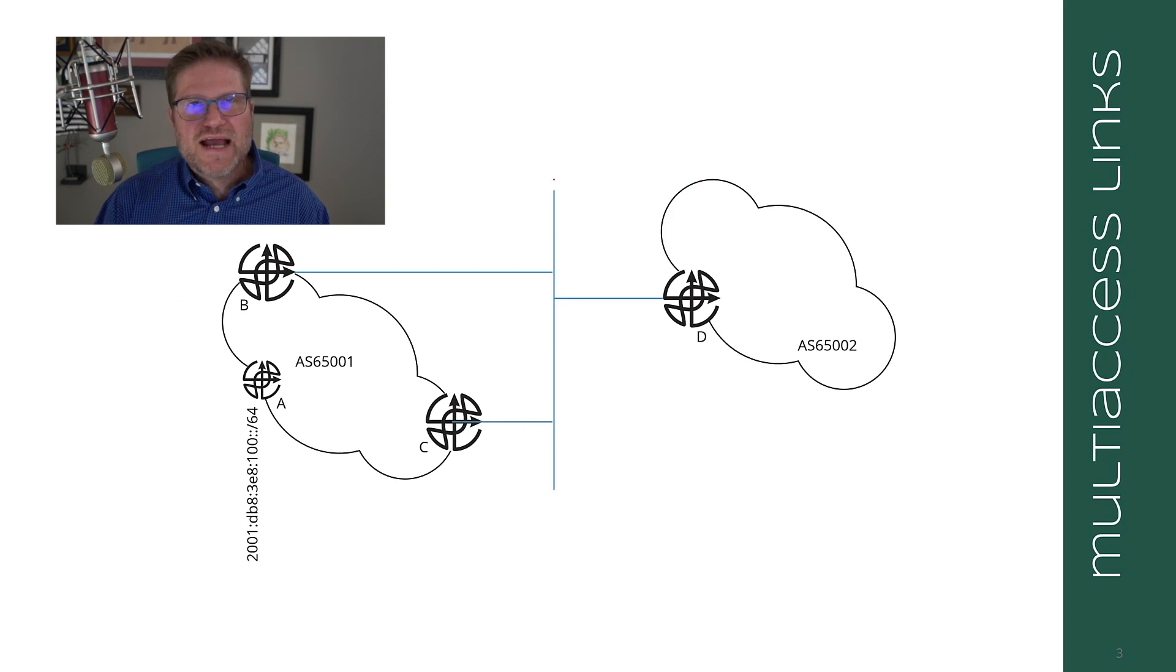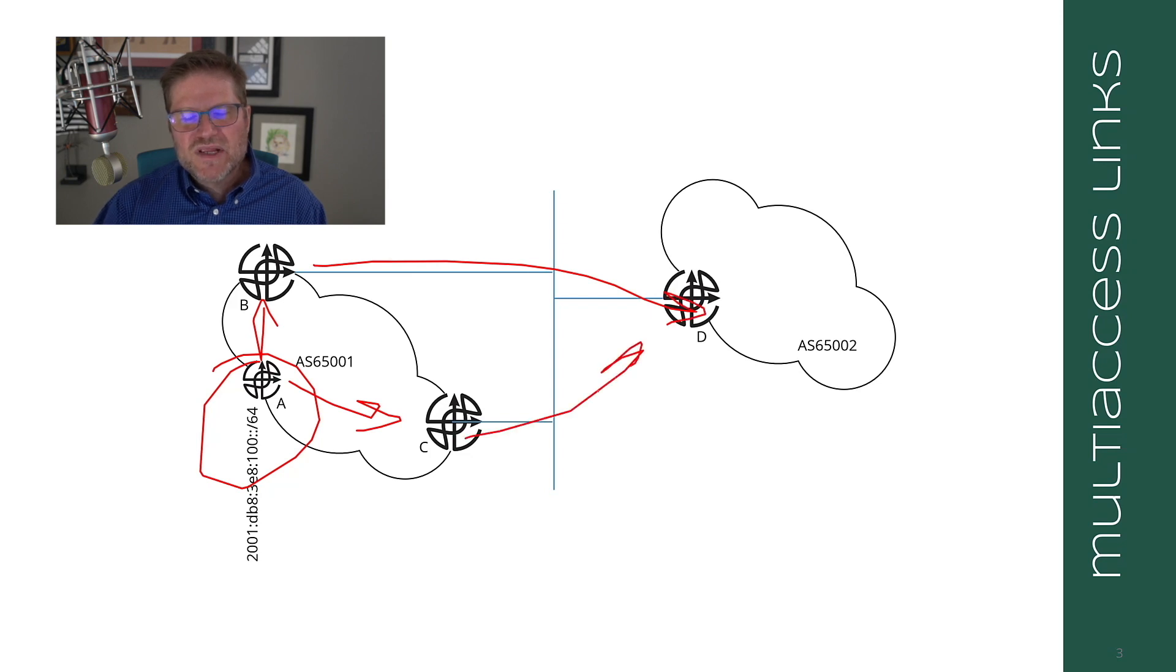Now, let's talk about multi-access links, which are quite interesting in BGP. So say that 100 colon slash 64 is being advertised by A to B and to C, and B and to C are both advertising this route to D. Now, what is interesting here is that this is a multi-access link here in the middle. This is an ethernet or something similar.